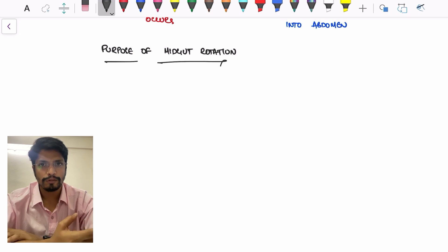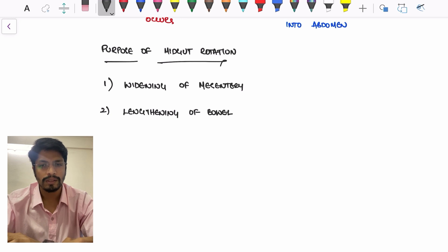What is the purpose of midgut rotation? What are the advantages? The first advantage is widening of the mesentery. Second will be intestinal lengthening. Third is the physiologically herniated component re-entry into the abdominal cavity. If it fails, it results in gastroschisis or omphalocele.